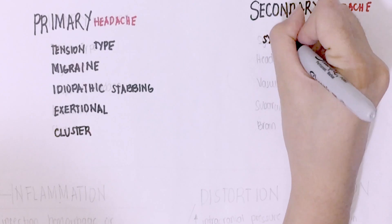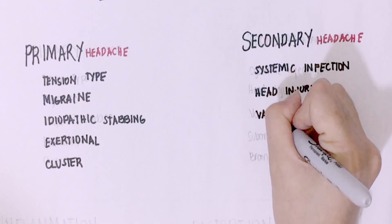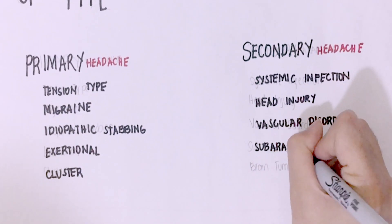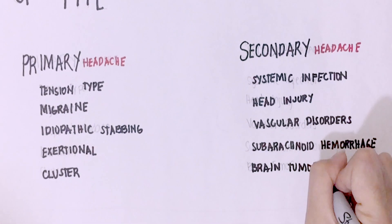While secondary headaches are headaches caused by exogenous disorders like systemic infection, head injury, vascular disorders, subarachnoid hemorrhage, and brain tumor.